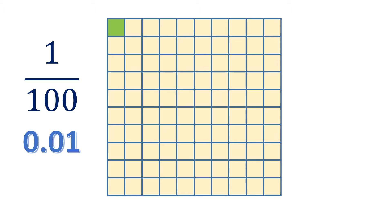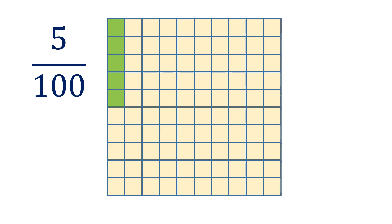Observe that if it's one-hundredth, then there will be two digits after the decimal point. So how about this? We have five shaded parts — that's five out of one-hundredth, or five-hundredths. In decimal, it's 0.05. So again, there are two digits after the decimal point if it's hundredths. This is also read as five-hundredths.